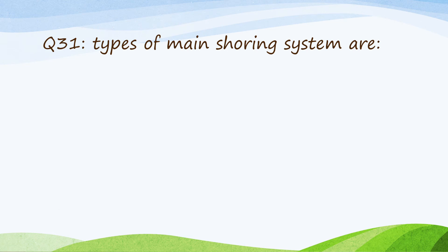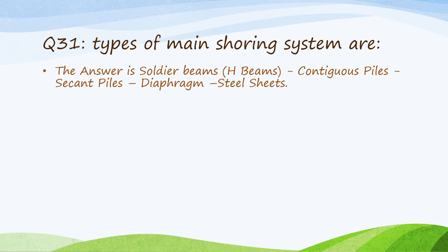Question 31: types of main shoring system are soldier beams, H beams, contiguous piles, secant piles, diaphragm, and steel sheets.